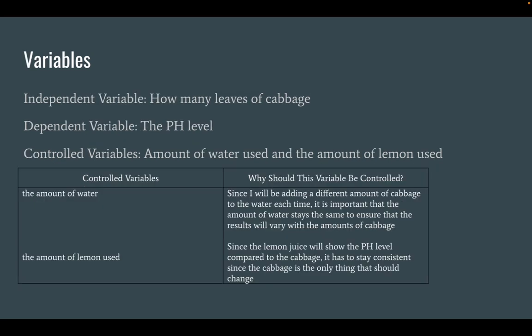Variables: the independent variable is how many leaves of cabbage are put into the water, and the dependent variable is the pH level, because the pH level will depend on the amount of cabbage put in. The controlled variables are the amount of water used per amount of cabbage and per test, the amount of lemon juice used, and the amount of time boiling.